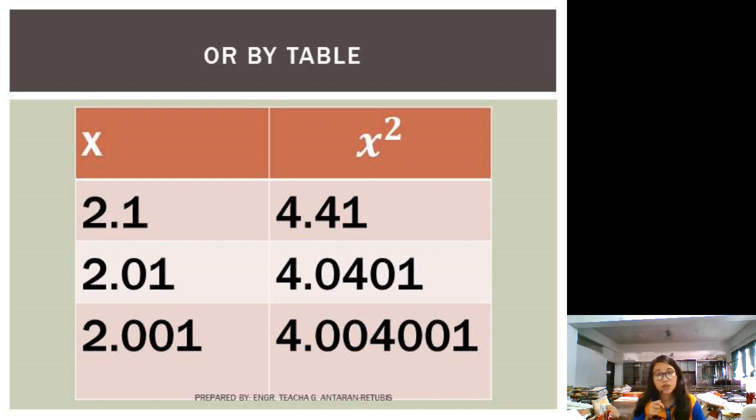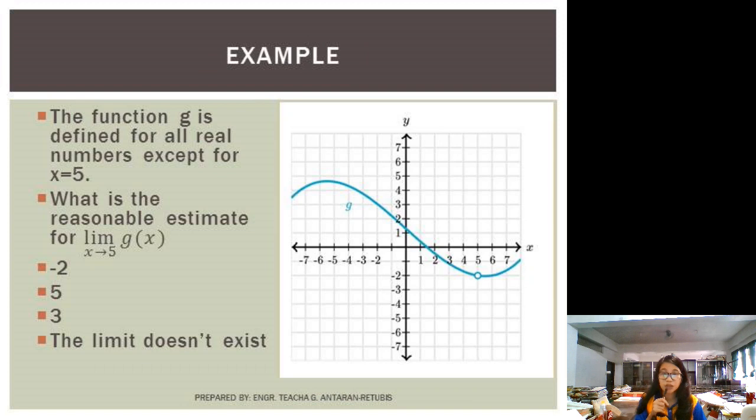Okay? So you can use a table to estimate, take note, estimate the value of the function. Or if the graph is available, so you can trace it, approach it from the right and approach it from the left. Okay? So that's it. That's it for the principle of limit. That it should have the same limit, or it should have the same value from the same side, or from both sides.